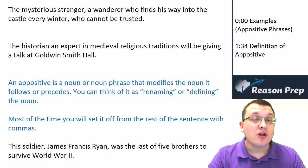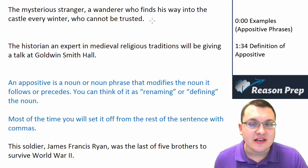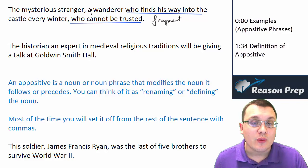We've looked at relative clauses and now let's take a look at appositive phrases. Let's begin by looking at these opening two examples: 'The mysterious stranger, a wanderer who finds his way into the castle every winter, who cannot be trusted.' Notice this is a fragment, and this one combines two things — it combines relative clauses. This relative clause is part of a larger phrase and this is an example of our appositive phrase.